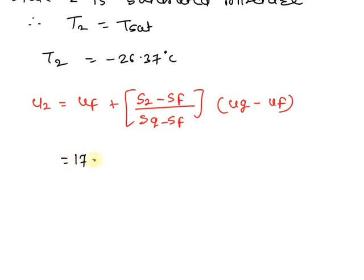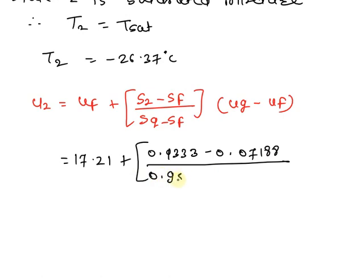We are getting 17.21 plus 0.9333 minus 0.07188 divided by 0.95183 minus 0.07188 into 215.19 minus 17.211. After calculating we are getting the value of U2 is equal to 211 kilojoule per kg.